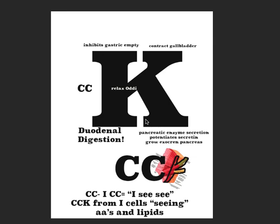This leg of the K represents the pancreatic duct, reminding you that cholecystokinin calls forth enzymes from the pancreas — also causing growth of the exocrine pancreas and potentiating secretin, which we'll look at in a second. Basically, it's calling out to the pancreas to do its exocrine job: grow, release, and secrete.